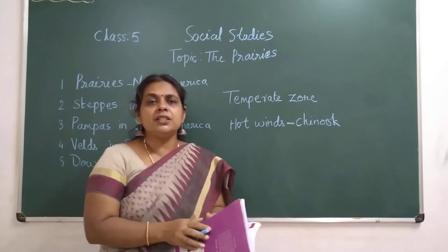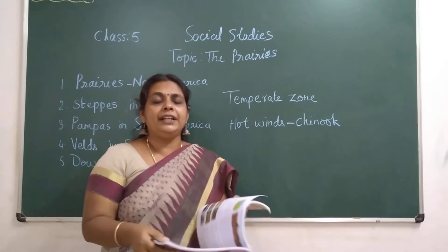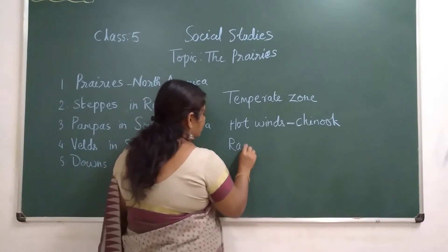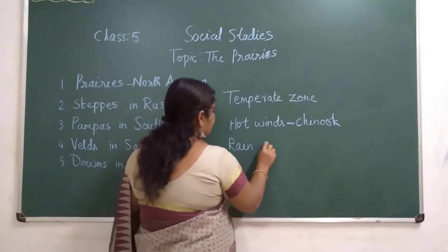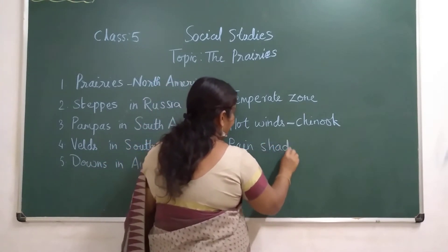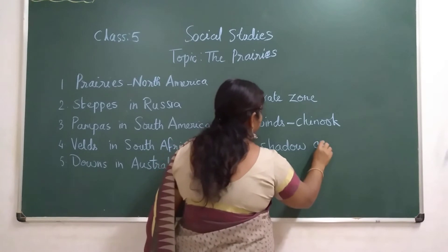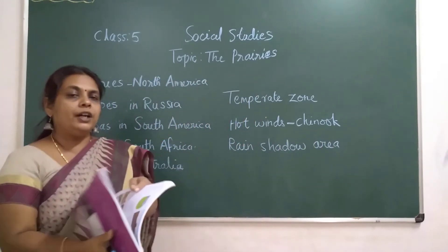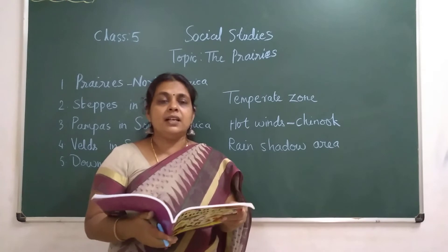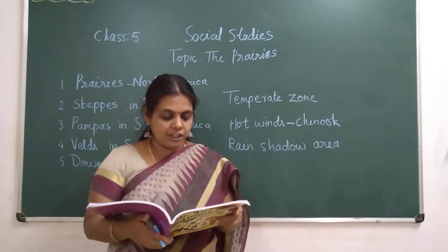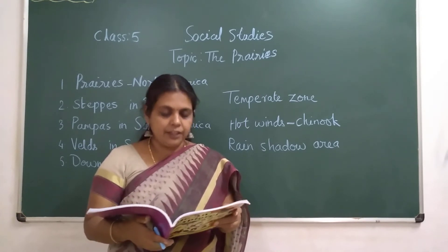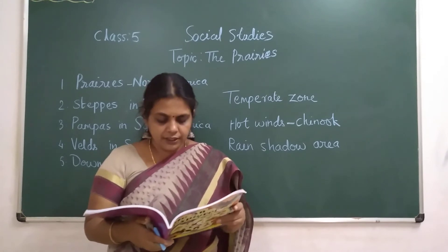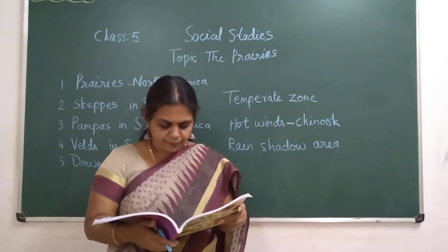These regions are located in the rain shadow area, which means they will not receive more rainfall. There are different types of animals and vegetation here, and the animals can withstand the harsh temperatures.